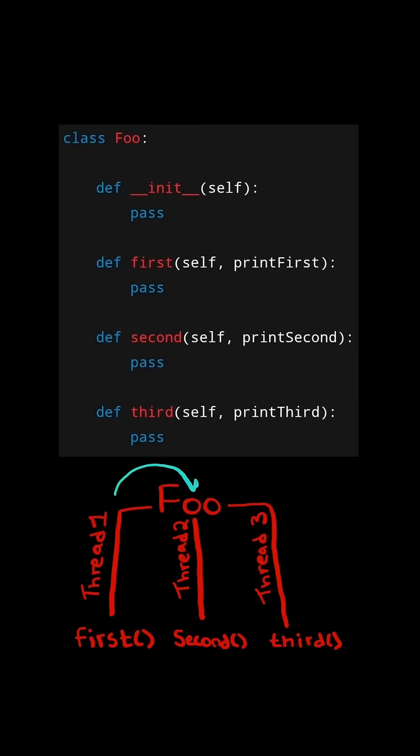The threads may be called out of order because one thread may be faster than the other. Design a mechanism such that we print in order.